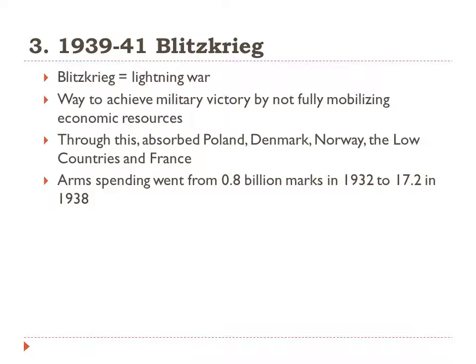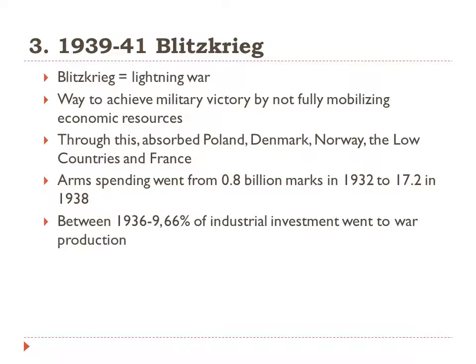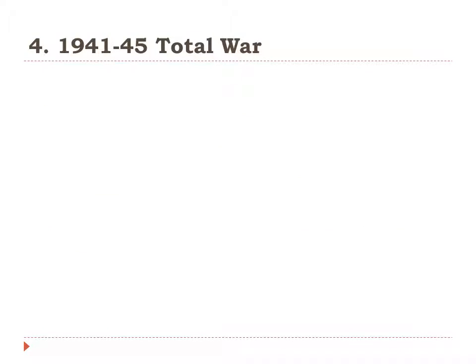There is a distinction between arms spending — the guns — and military spending, which includes soldiers, equipment, logistics, and all of that. Between 1936 and 1939, in order to prepare for Blitzkrieg, 66% of industrial investment went into war production. They were prepared for Blitzkrieg, but when it became total war, that brought a fourth stage of German economic policy under the Nazis.